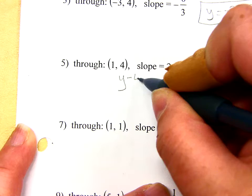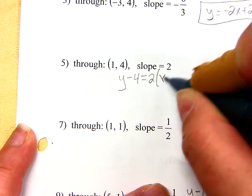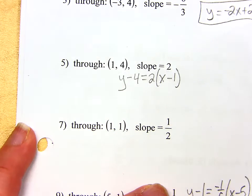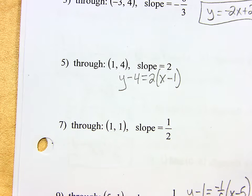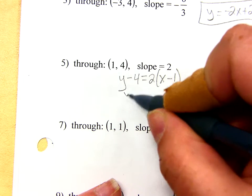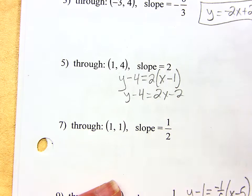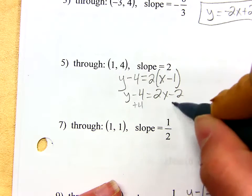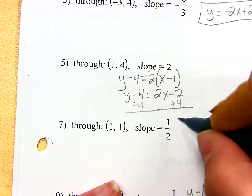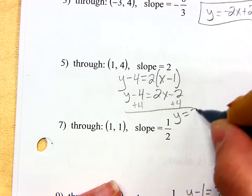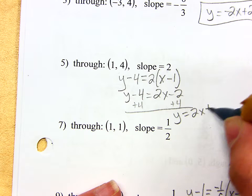Y minus Y1 equals M times X minus X1. So that's where I start, but that's not where I finish, because that's not slope intercept form. And to get into slope intercept form, I distribute the 2, and I add the 4. So my final answer is Y equals 2X plus 2.